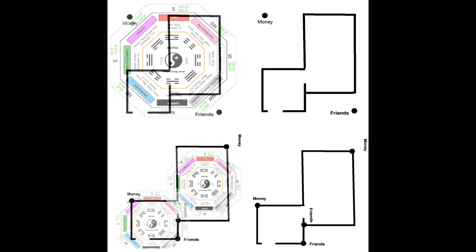Sometimes the eight point diagnostic method is not always easily applied. There are places that have such odd shapes that several of the points appear to be missing entirely, as shown in this example. In a space that has two or more rooms in which the overall shape lacks one point, look for the points in the separate rooms, as shown in the lower two diagrams. The overall space appears to be lacking both the money and the friends point, but if you use a two-Bagua layout, you can see that the money and friends point can be found in both rooms.